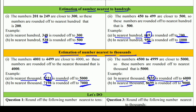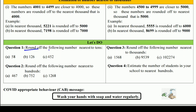Now let's do some practice questions. Q1: Round off the following numbers nearest to 10s. Nearest to 10s में सिर्फ unit place देखना है। (a) 58 — unit digit 8 है, 5 से ज़्यादा है, तो 60. (b) 126 — unit digit 6 है, 5 या 5 से ज़्यादा है, तो 130. (c) 452 — unit digit 2 है, 5 से कम है, तो 450.